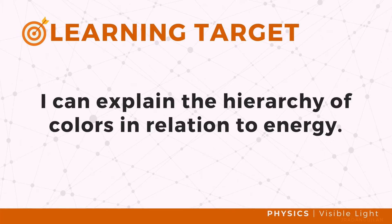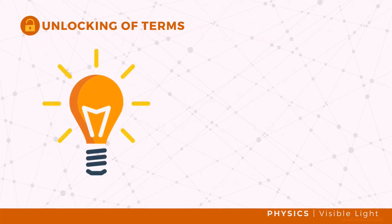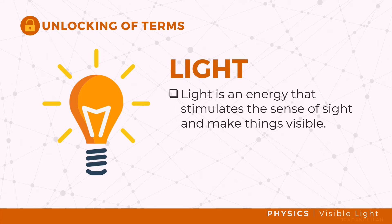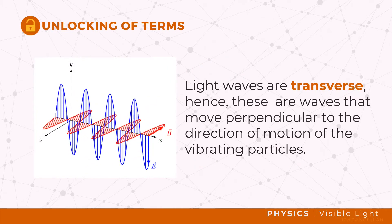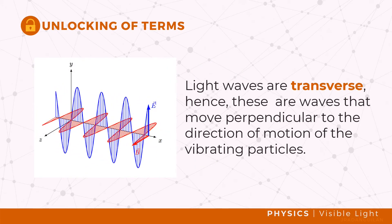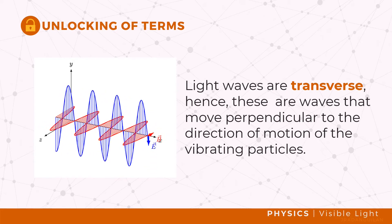Specifically, we will explain the hierarchy of colors in relation to energy. But before that, we need to understand first the concept of light. Light is an energy that stimulates the sense of sight and makes things visible. It can be characterized as a wave and a particle. Light waves are transverse waves which move perpendicular to the direction of the motion of the vibrating particles.